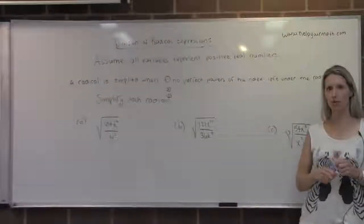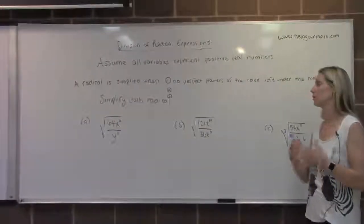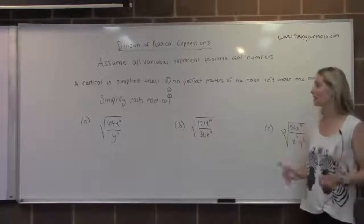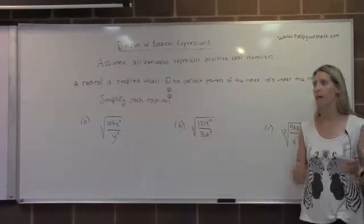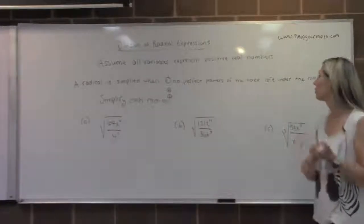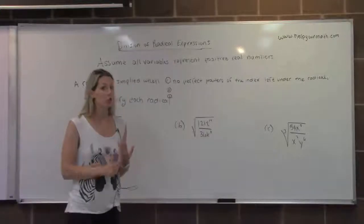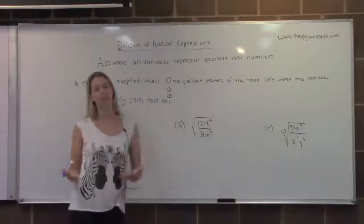Before we get to division of radicals, I want to review what it means for a radical expression to be completely simplified. A radical expression is completely simplified when there's no perfect powers of the index left under the radical. That's the first rule, but there are actually two more rules about radical expressions.